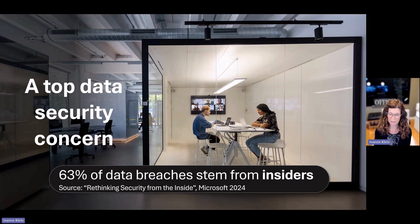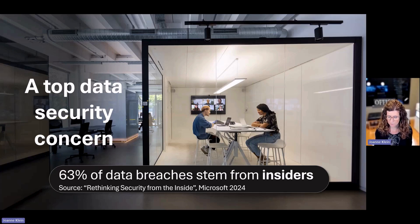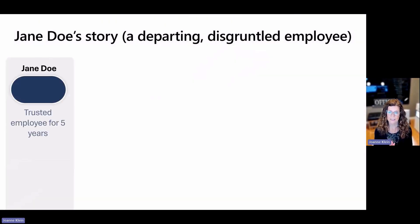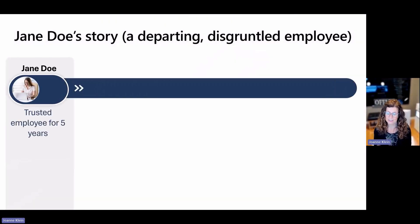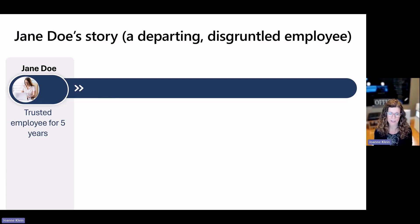What do I mean by insider risks? I mean malicious or negligent office workers, security evaders, third-party vendors, and even the departing employee scenario. To showcase adaptive protection inside insider risk management, I'm going to choose one of those quite common scenarios, and that is a departing — and in this case disgruntled — employee at an organization, and the sequence of events that might transpire prior to them leaving.